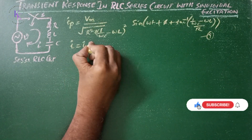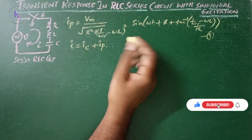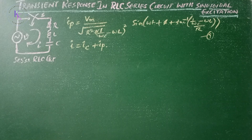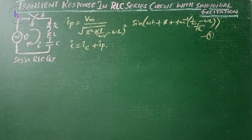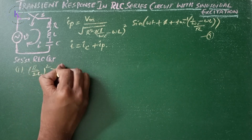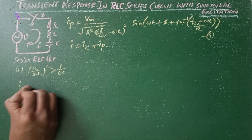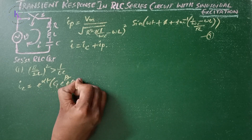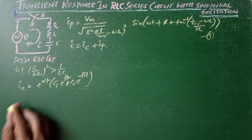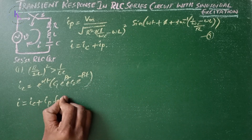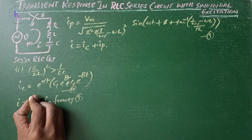The net current i = ic + ip. The complementary function ic corresponds to the DC response of the RLC circuit. For Case 1, the over-damped case where (R/2L)² > 1/(LC), ic = e^(αt)·[C1·e^(βt) + C2·e^(−βt)], and the net current i = ic + ip.